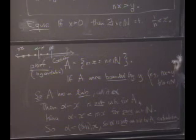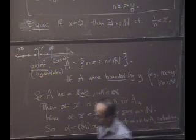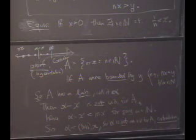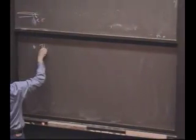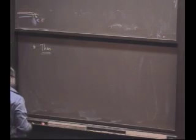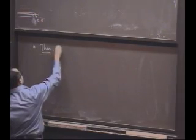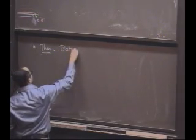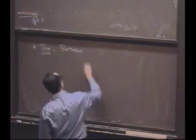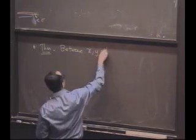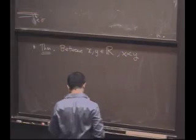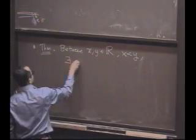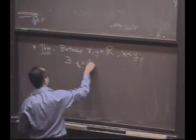So this is an innocuous statement, but it actually has another consequence, which is worth pointing out, and may be a surprise to some of you. And that's the following theorem. If you give me any two real numbers between any x and y in R, let's say x is less than y, I claim there is a rational in between them.